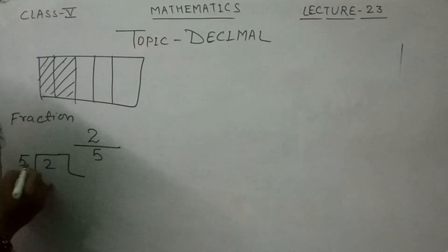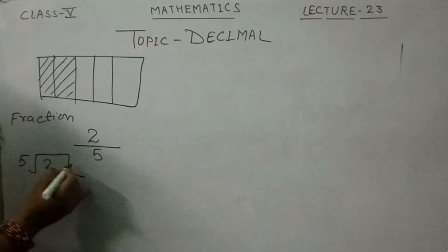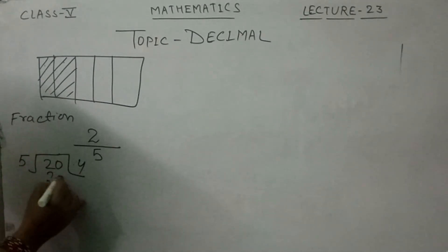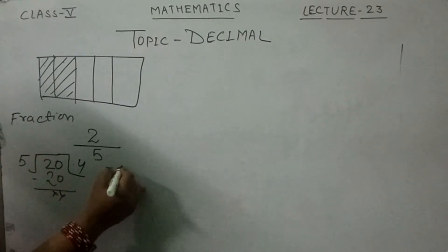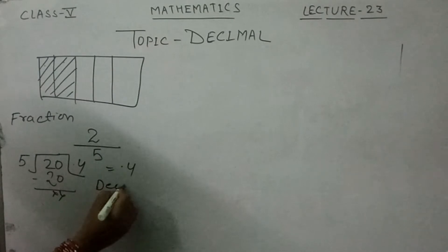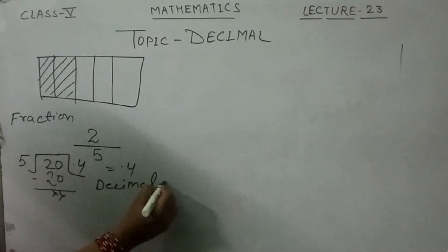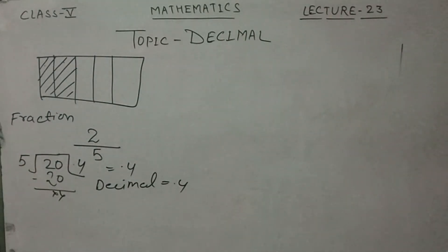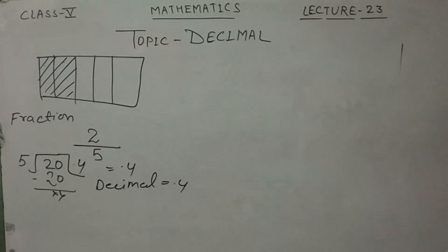2 is less than 5, so we put a point here. We get 0. Then 5 fives of 20, which gives us 0.4. In decimal we write 0.4. So 2/5 means 0.4. This is the way to convert a fraction to decimal — by dividing the number we can easily convert it into decimal form.